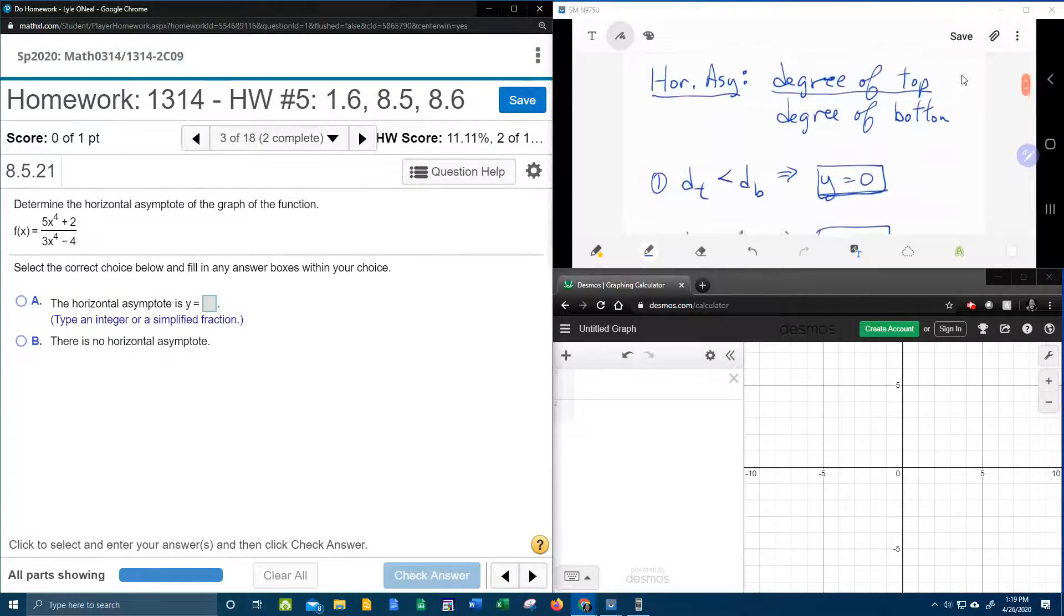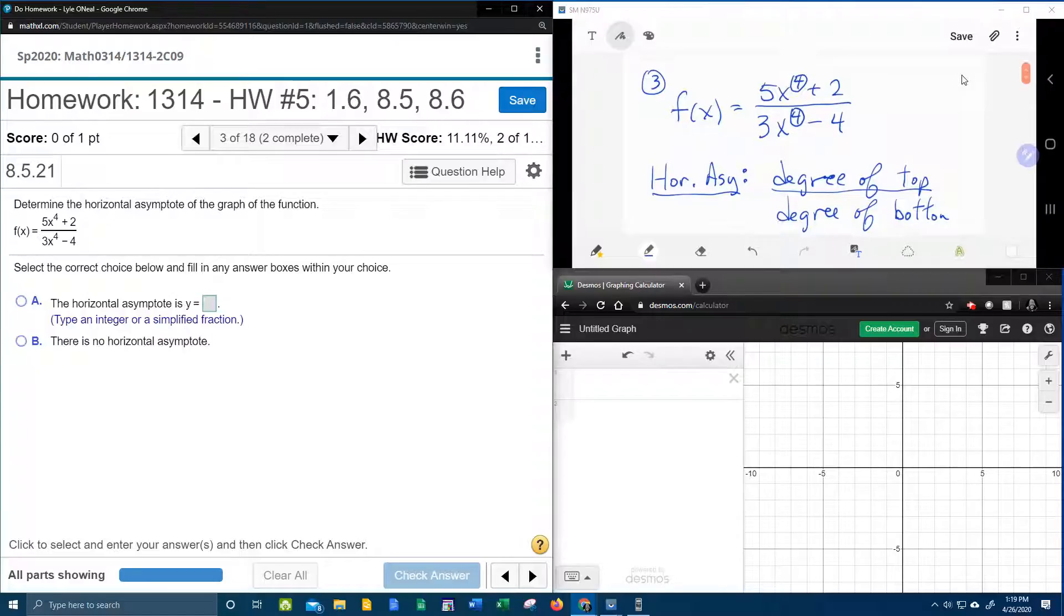So in our case, we said the degree of the top is equal to the degree of the bottom. So our asymptote is going to be y equals a over b, where a is the lead coefficient of the top, and b is the lead coefficient of the bottom. And so our horizontal asymptote should be y equals five-thirds.